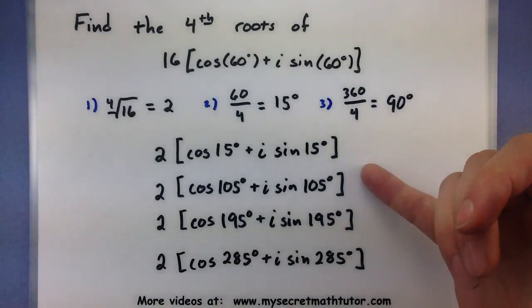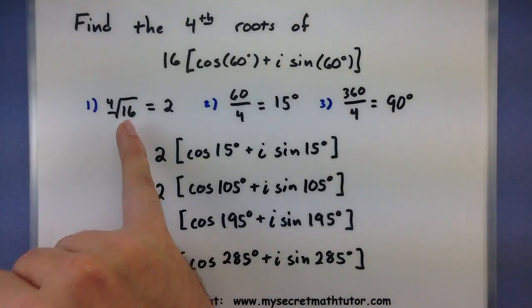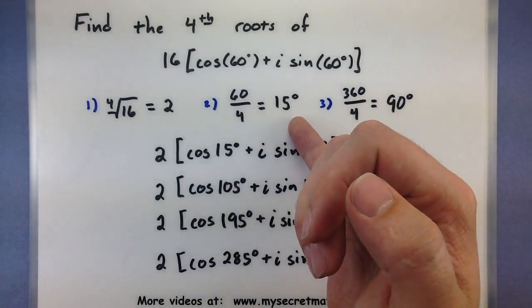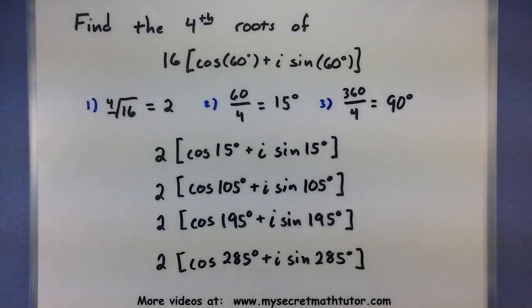But, now that we have all 4 of our fourth roots, we can say that this one is done. So, remember, find those 3 bits of information like the index of the modulus. Divide your angle by the index of the root. And divide 360 by the index of the root. And then put it together carefully to build all of your roots.